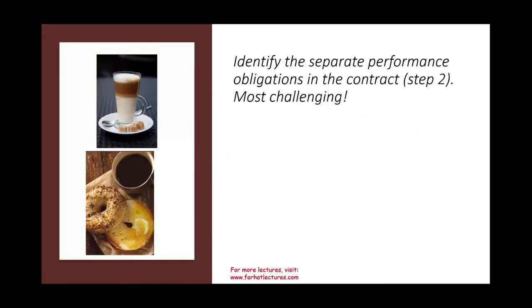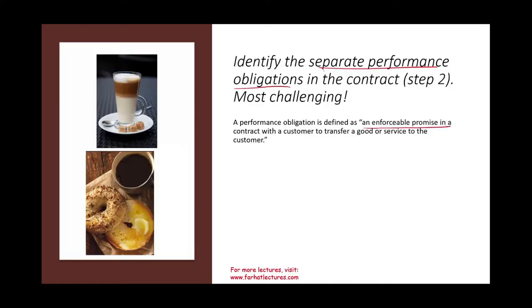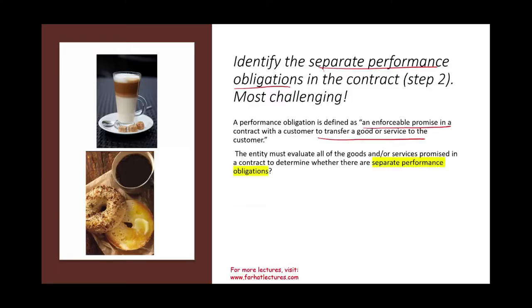Step two: identify the separate performance obligations in the contract. This is usually the most challenging in business because, as you saw in the Verizon example, you may have many components to a contract, and each component could be a separate performance obligation. A performance obligation is defined as an enforceable promise in a contract with a customer to transfer goods or services to the customer.